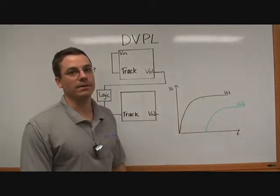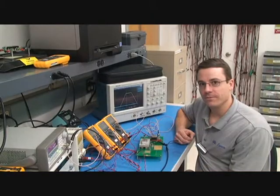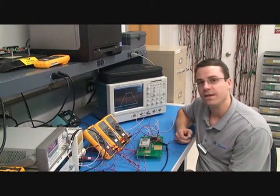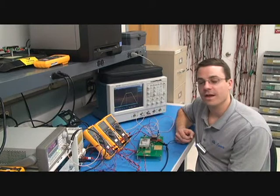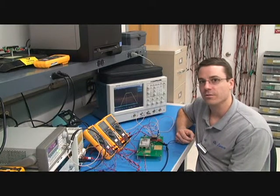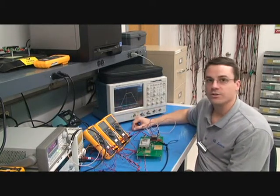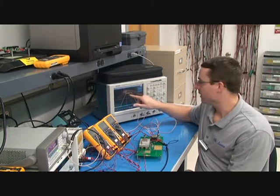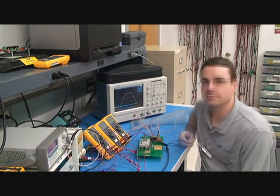Now we'll go to the lab for a demonstration. For the lab portion of this video, we're going to use a standard DVPL 5 amp powered from a DVHE 5 volt. The voltage applied to the track pin is generated from an Agilent function generator and shown on the scope behind me. The slew rate of the rise is 2 volts per millisecond, it has a peak of 5 volts, and the negative slew rate is also 2 volts per millisecond.